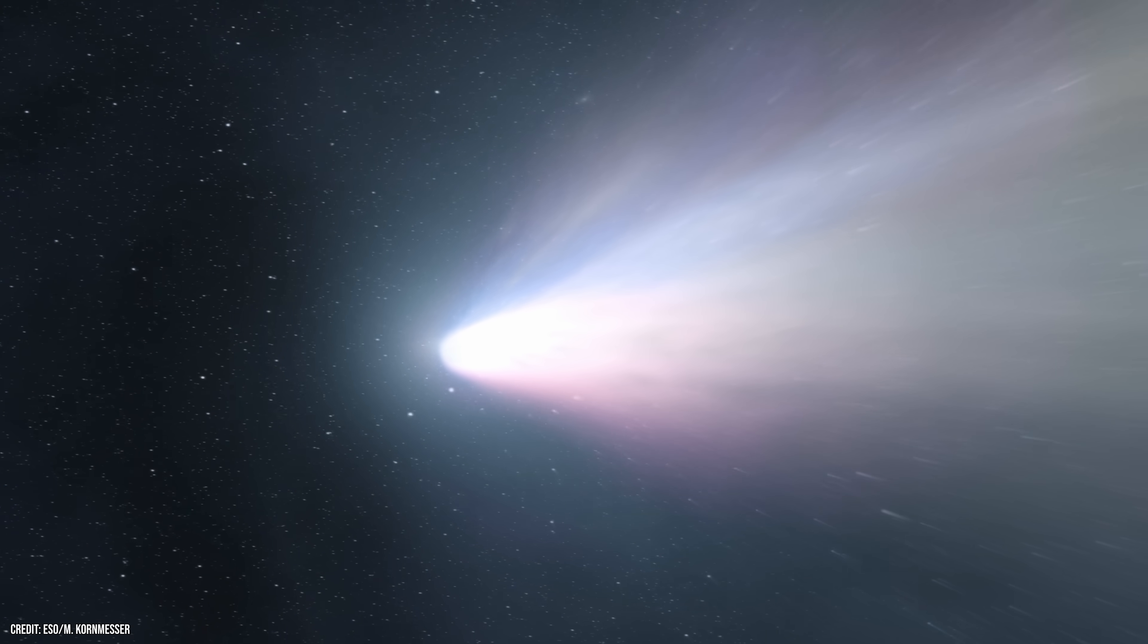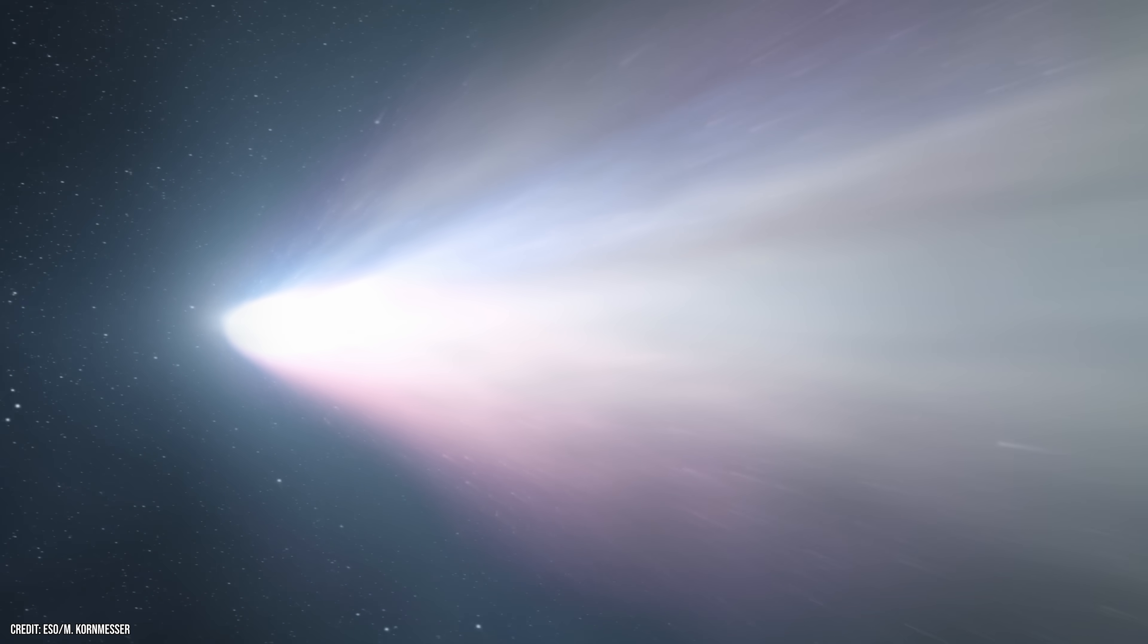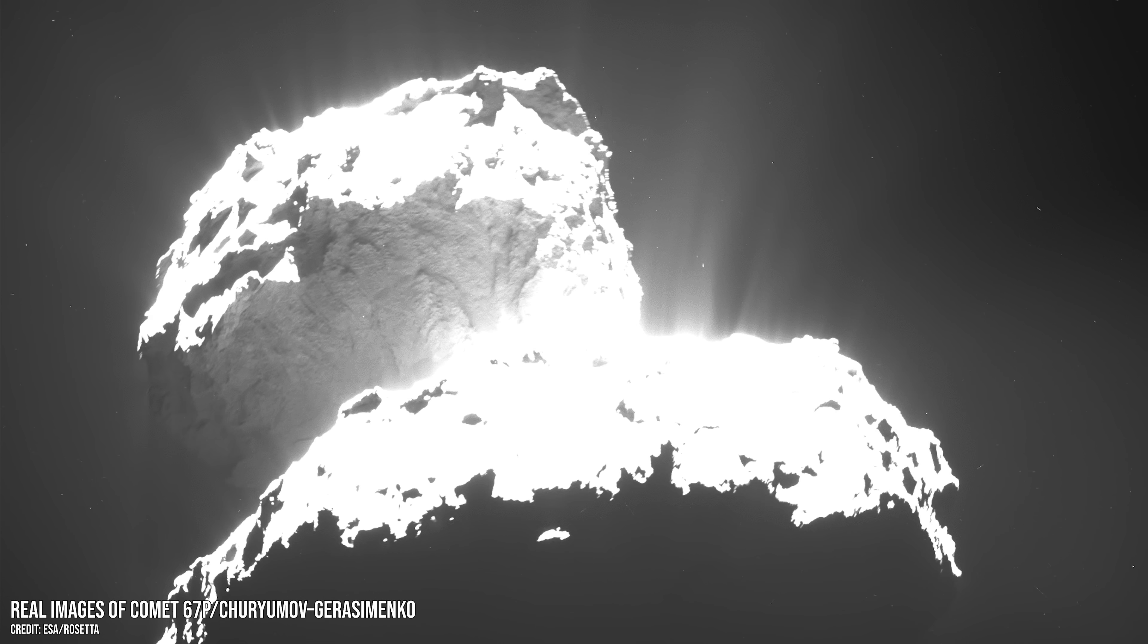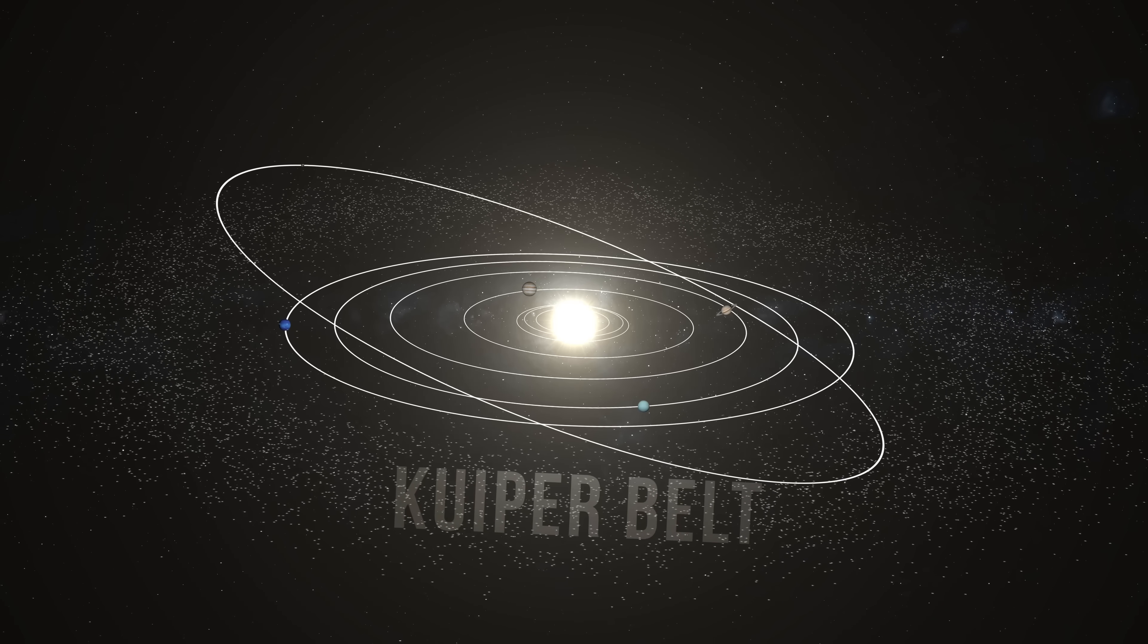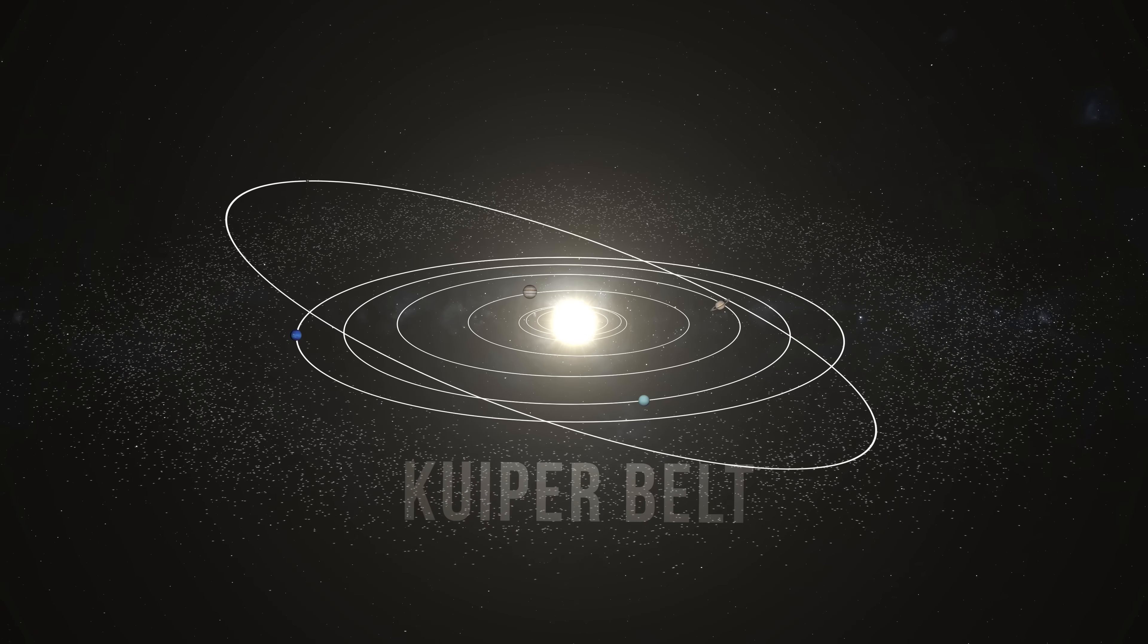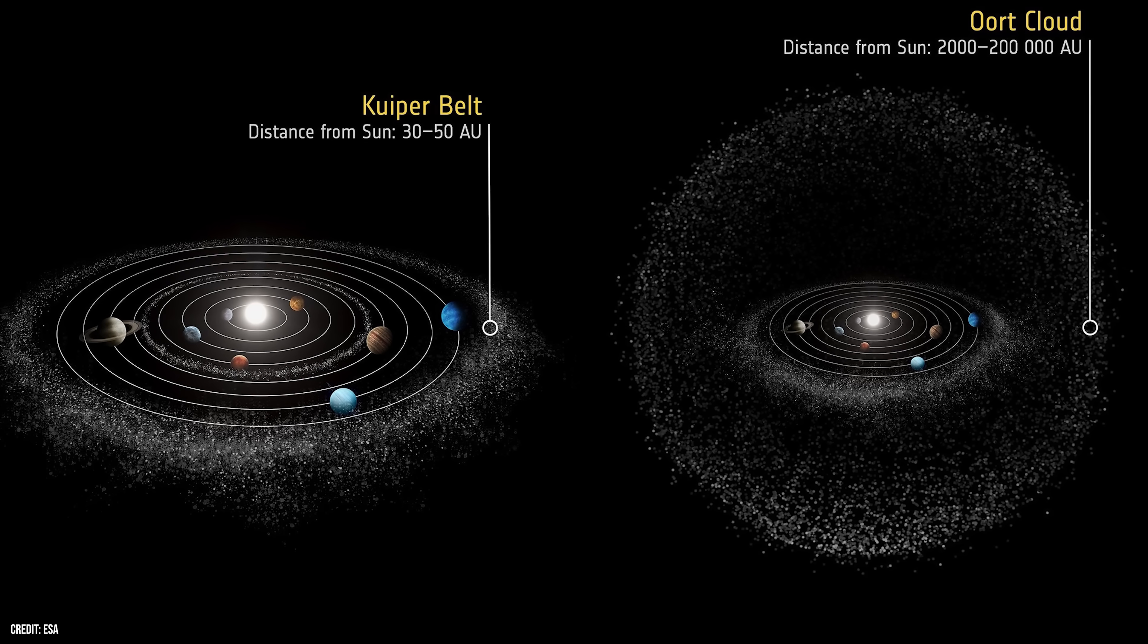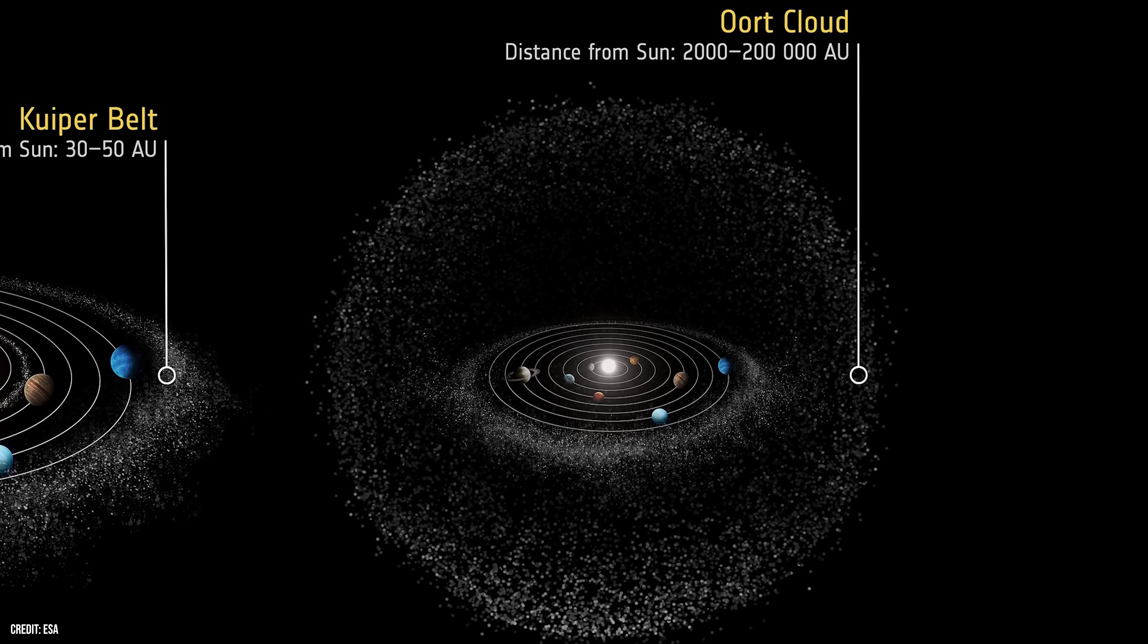Comets are giant bodies of frozen gases, rock and dust that orbit the sun. You can think of them like enormous dirty snowballs tumbling through space. There are likely billions of frozen comets orbiting far beyond Neptune, in a region called the Kuiper Belt, or even the more distant, mysterious region called the Oort Cloud, a hypothetical shell of icy objects that surround the entire solar system.